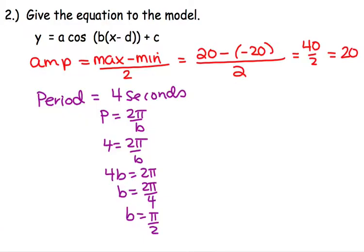So we'll go back then. Our A value is negative 20, and our C and our D don't exist. We didn't push it up or down, left or right.